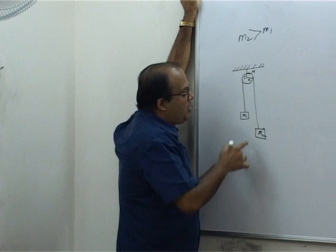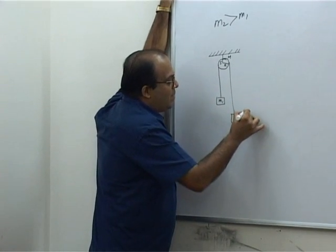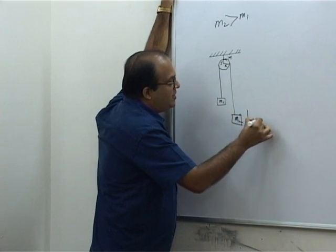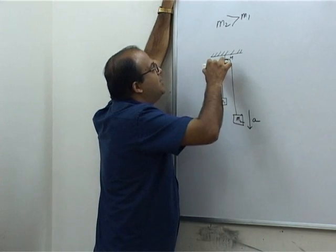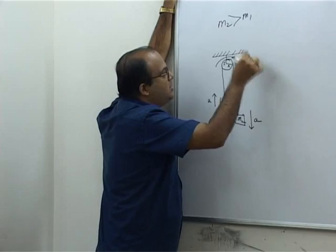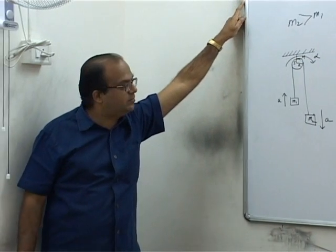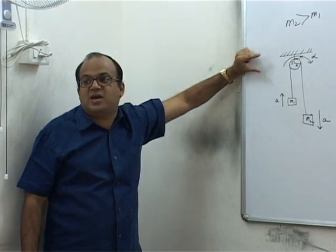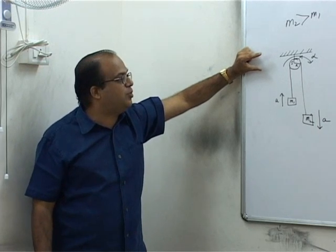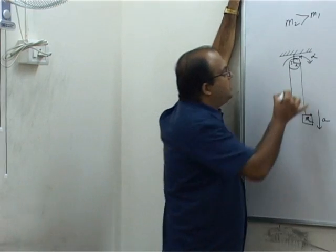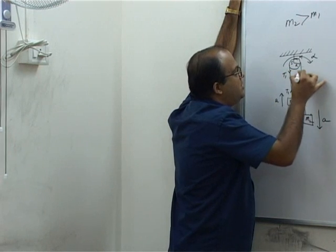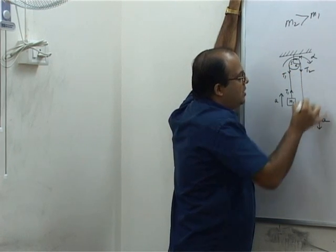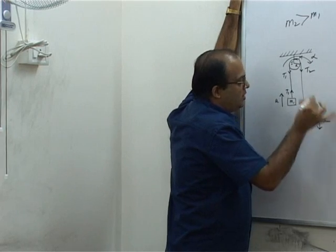Now because M2 is greater than M1, M2 will accelerate down with an acceleration A, M1 will accelerate up with an acceleration A, and the pulley will have an angular acceleration alpha. Now whenever the pulley has mass, tension on both sides of the pulley will be different. So let us take the tension here as T1, so this will also be T1, this will be T2 and the acceleration will be T2 here.